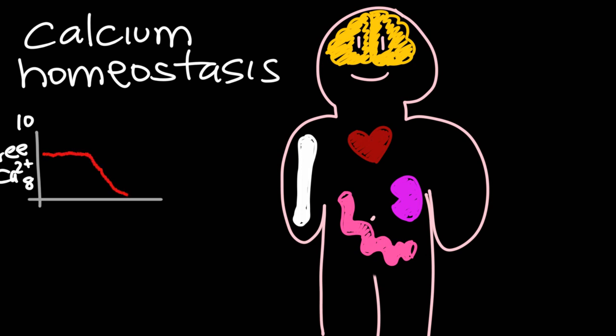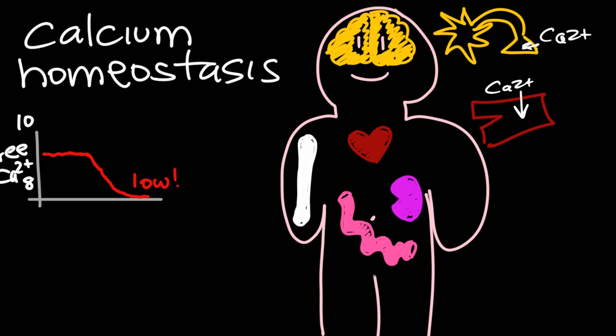If the calcium levels in your blood ever drop to a critically low level, the body is going to need to respond. Now you might think of calcium as needed for your bones, but actually calcium is critically important for function of the brain and the heart. Cardiac myocytes and neurons need calcium in order to have action potentials, to contract, and to release neurotransmitter. Even your skeletal myocytes in your muscles need calcium in order to function. So whenever calcium gets too low, how does the body regulate it and increase it back towards normal?